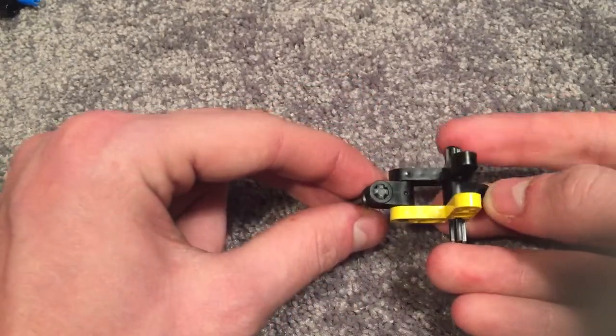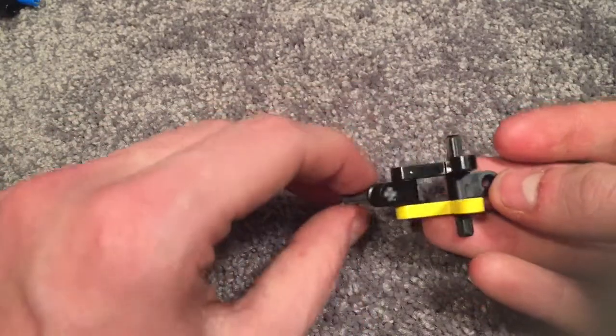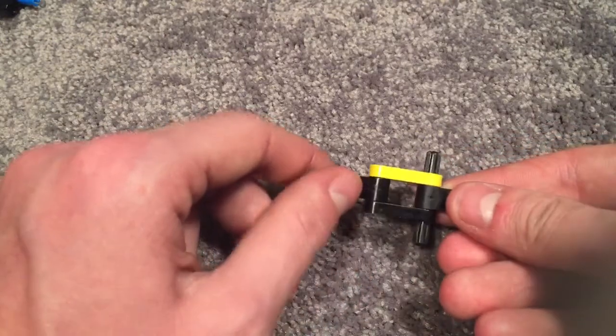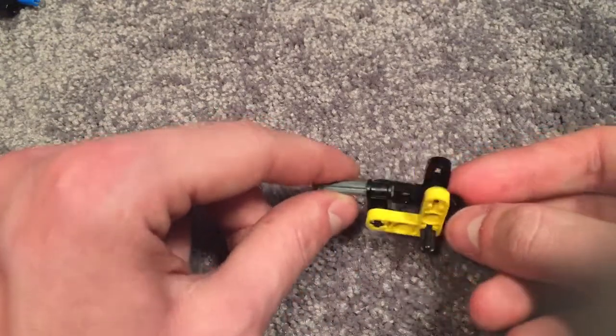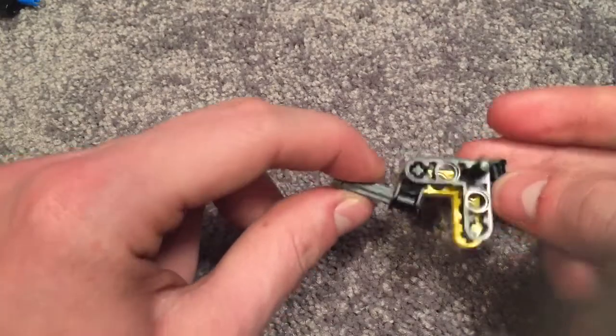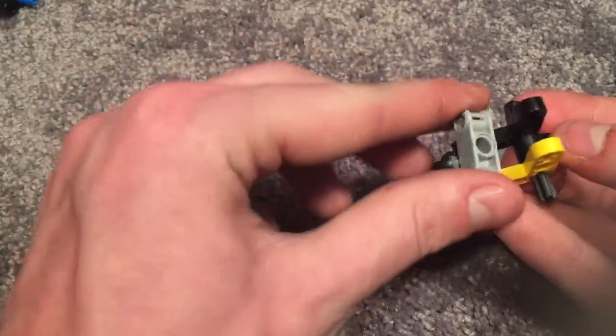We got a four stud axle back here, two stud axle up front, and these two connectors are held on there by their circular joint, the one meant for pins. Basically just put this connector in here, put these up around it, and then attach it together.